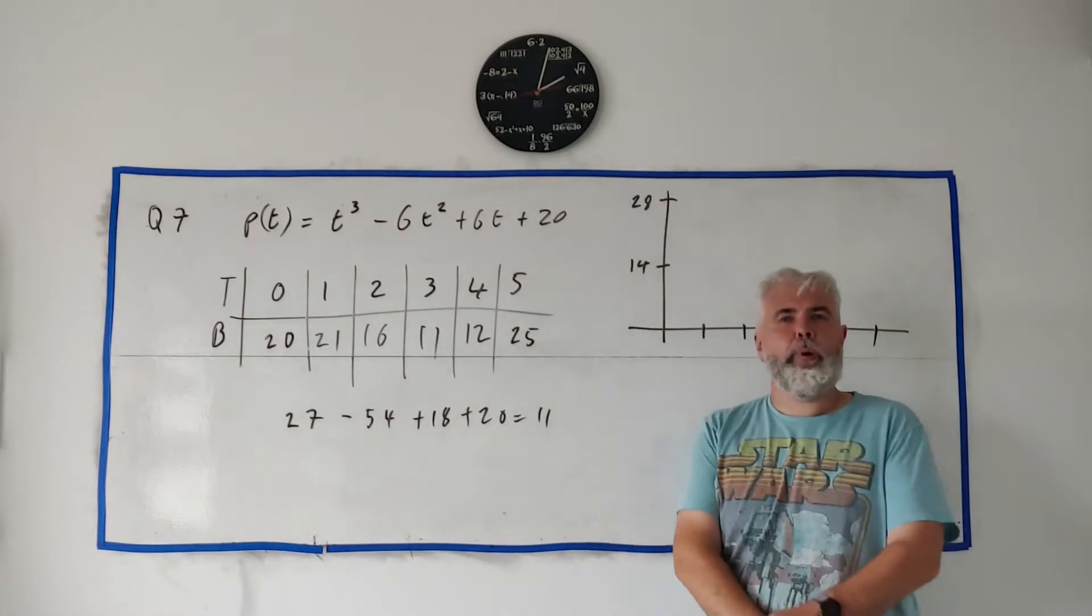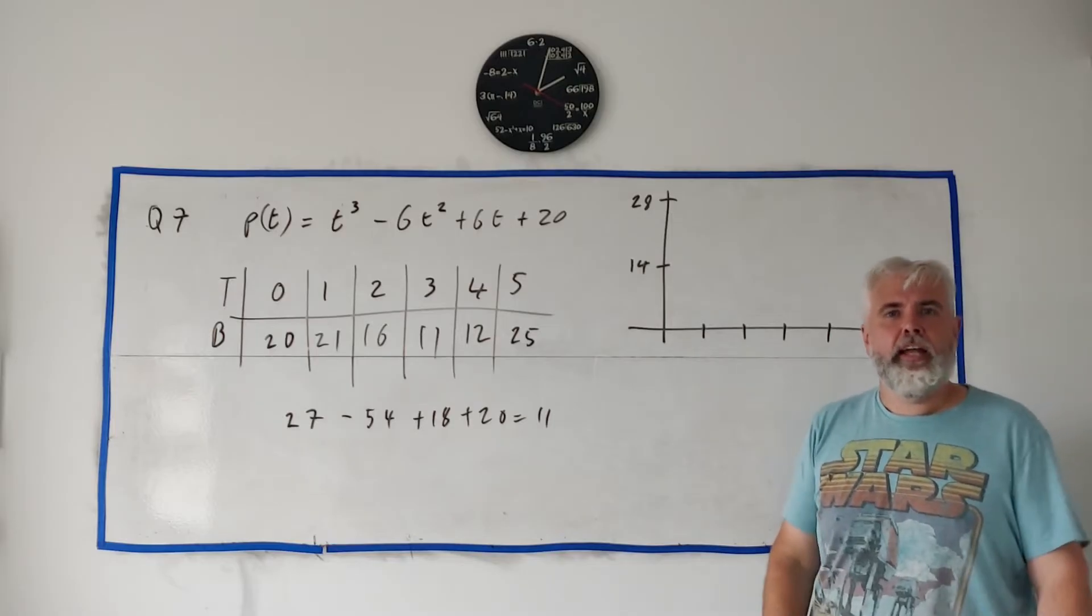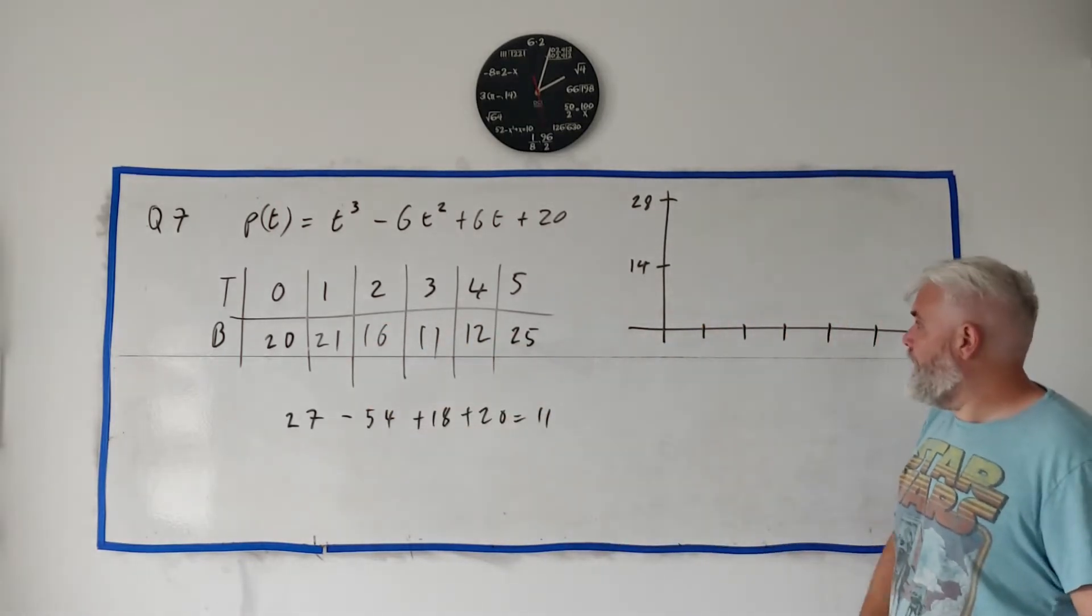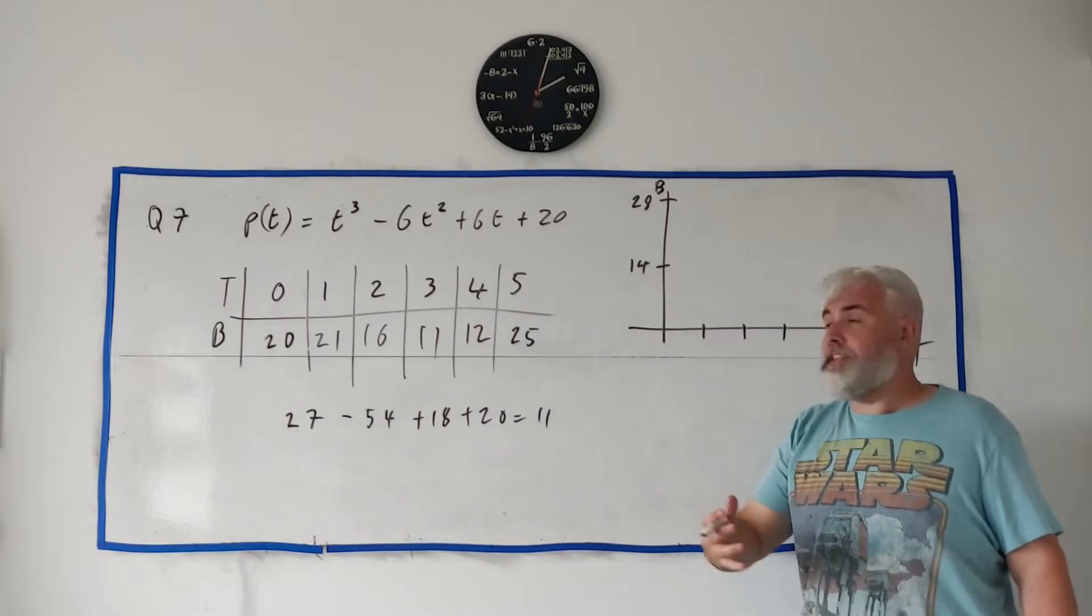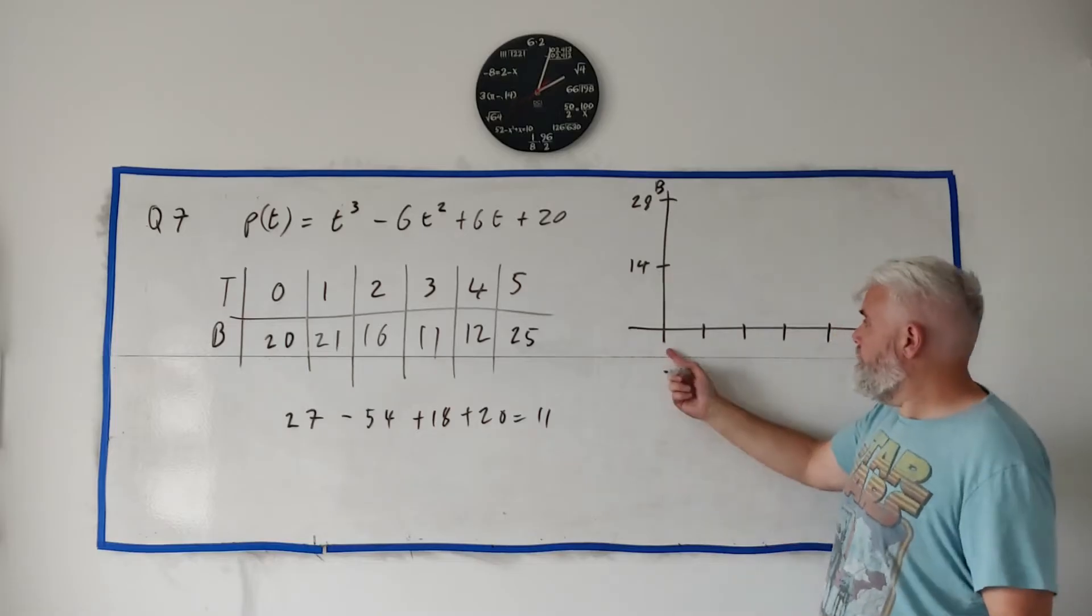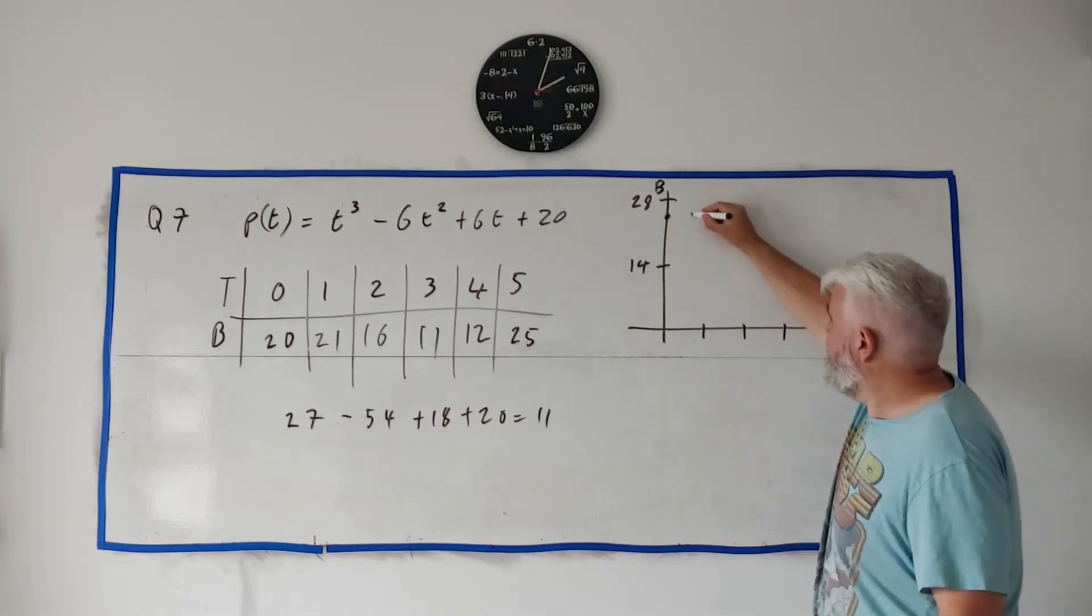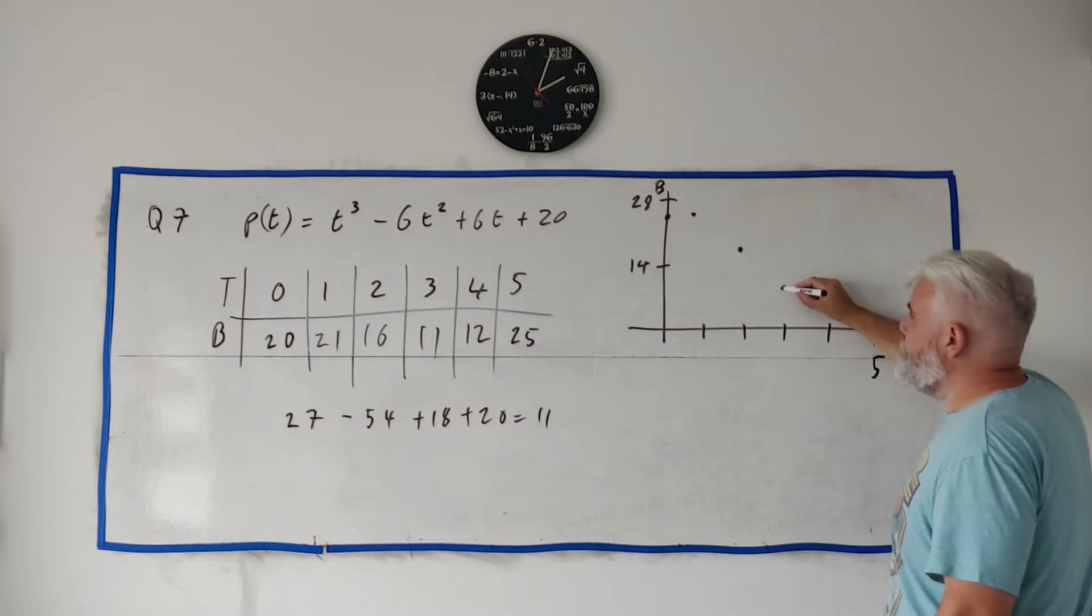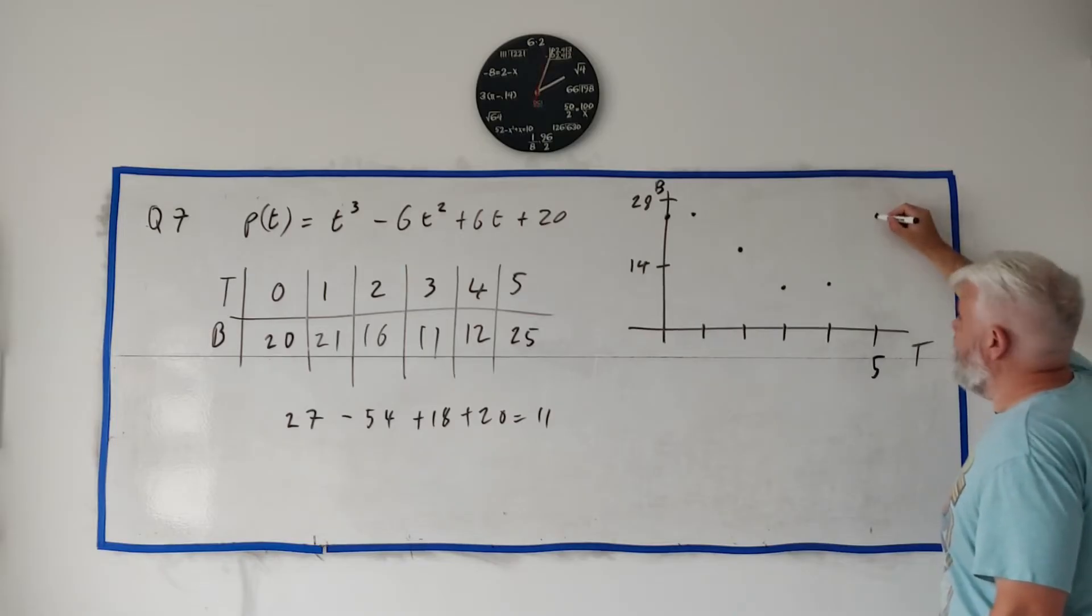For part two they give us a graph, and they want you to fill in this information on it. So how do we do that? Zero on the bottom row here is t, this is bacteria—number of bacteria—and this is numbered up to five. So for zero here, we put in 20. For 1, we do 21. For 2 is 16, and so on. You should be able to do this a lot more accurately than I do because you'll be able to use a ruler, and they already have lines out for you as well.